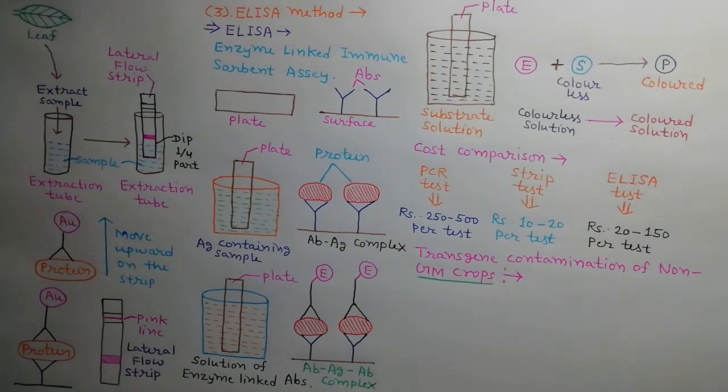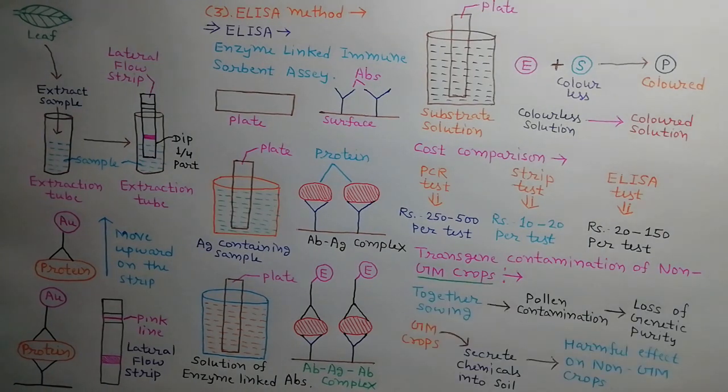Last topic we will discuss is transgene contamination of non-GM crops. If both GM and non-GM crops are grown together in the field, then undesired pollen from GM crop can pollinate non-GM crop. This results in loss of genetic purity of non-GM crop. Besides this, GM crops also secrete some chemicals into the soil which harm the non-GM crops.